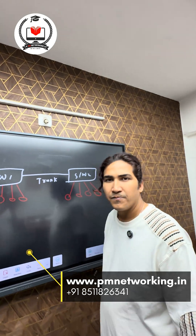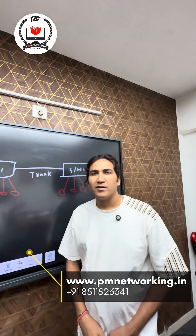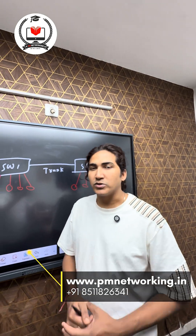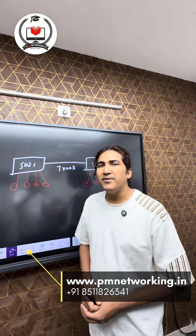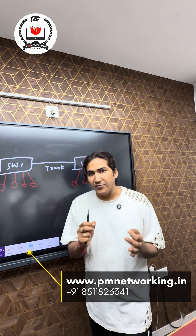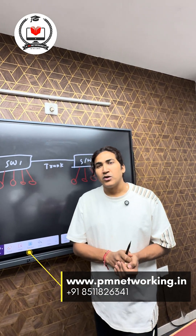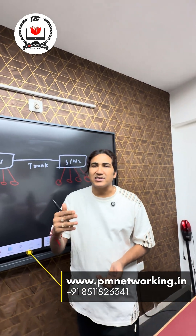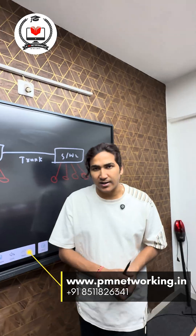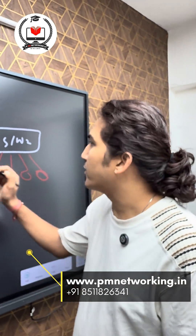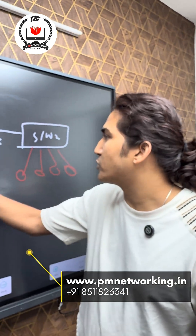Native VLAN is a special type of VLAN used to support untagged traffic on the trunk link. For example, in this scenario I have switch one and switch two, and the link between the switches is a trunk.